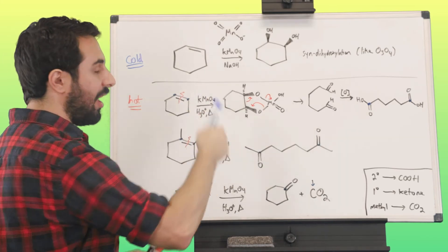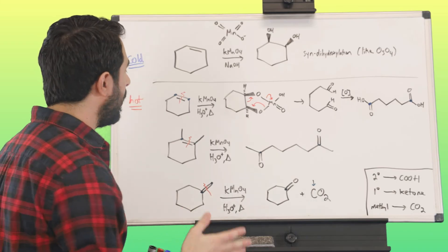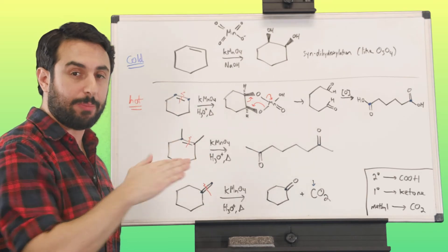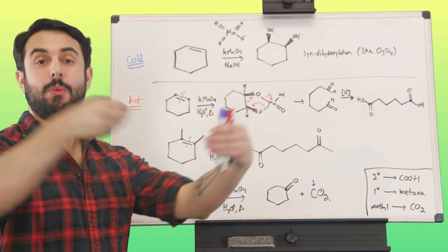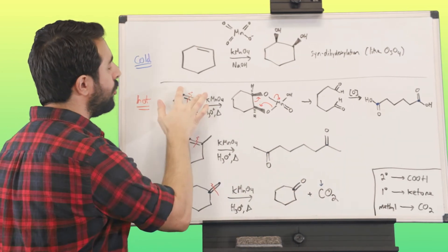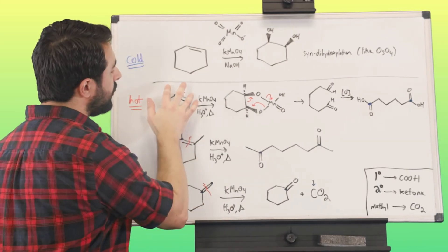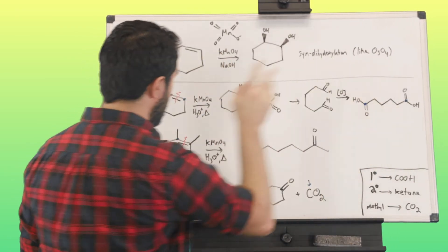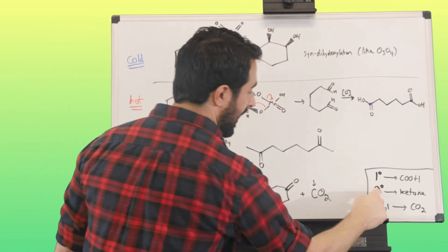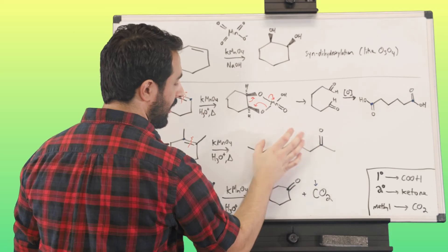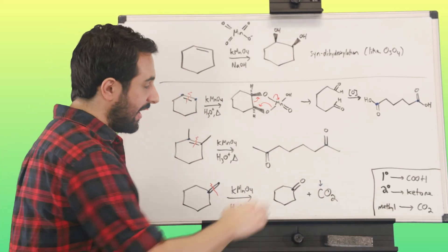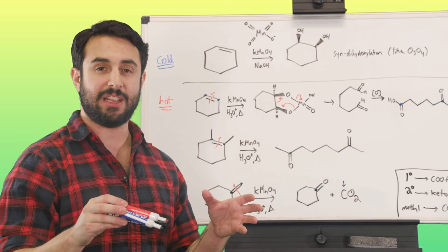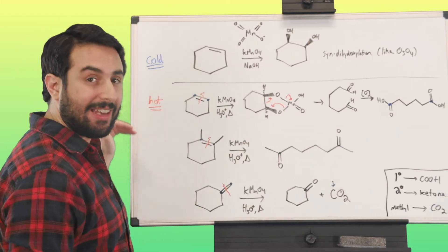So with the hot conditions, the hot acidic conditions, it's going to be a little bit trickier, but what we know is we're going to cleave the alkene. We're going to cleave that double bond, both the pi bond and the sigma bond. We're going to open that up, or if it was a linear molecule, we would pull the molecule into two fragments. Then you look at the two carbons that were participating in the pi bond. If those two carbons would end up being primary carbons, that is going to produce carboxylic acid functional groups. If those two carbons end up being secondary carbons, that is going to produce a ketone. And if that carbon ends up being a methyl carbon, that is going to produce CO2. So that is a summary of the oxidative abilities of potassium permanganate in the context of alkenes, both in the cold conditions and in the hot conditions.